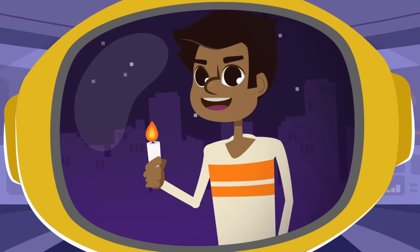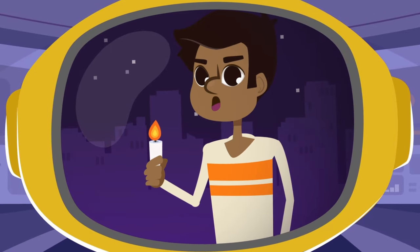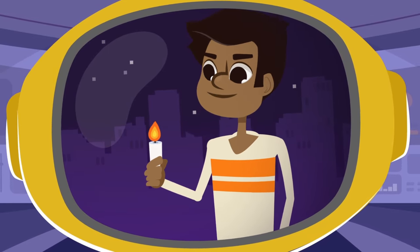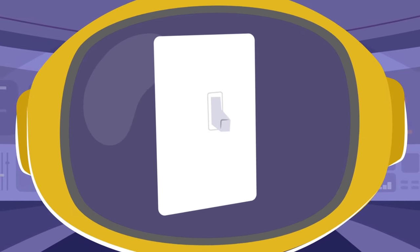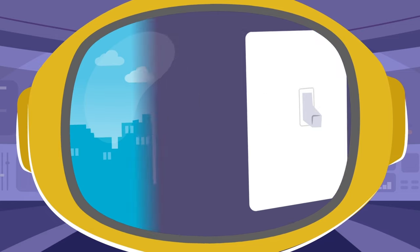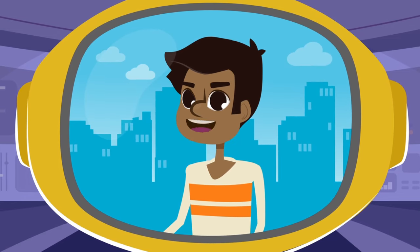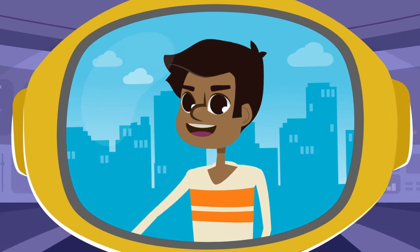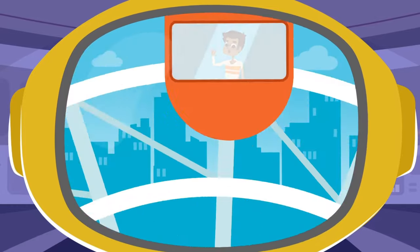Before electricity was invented, people used candles for light. Now, with just a push of a button, we can light up our houses. Not only that — with electricity we can power trains and amusement park rides.